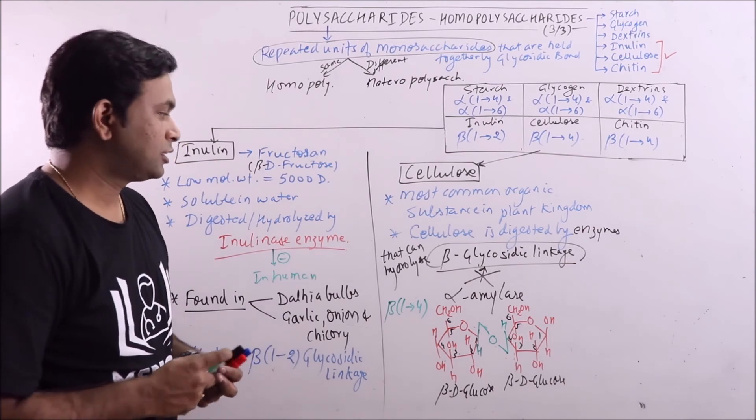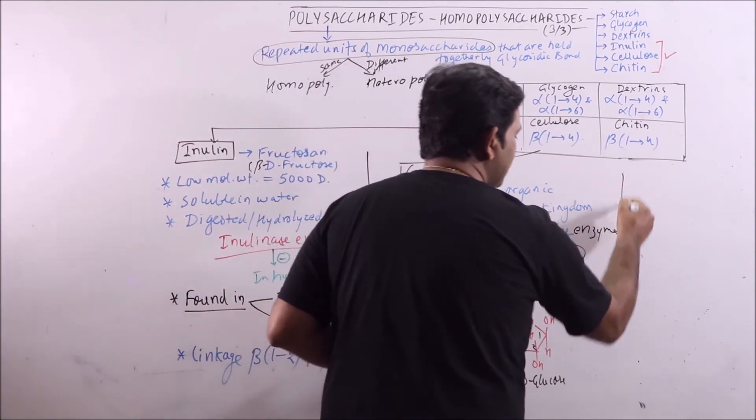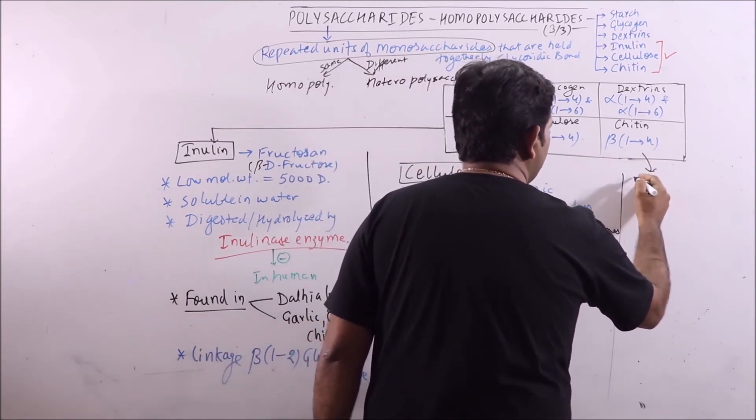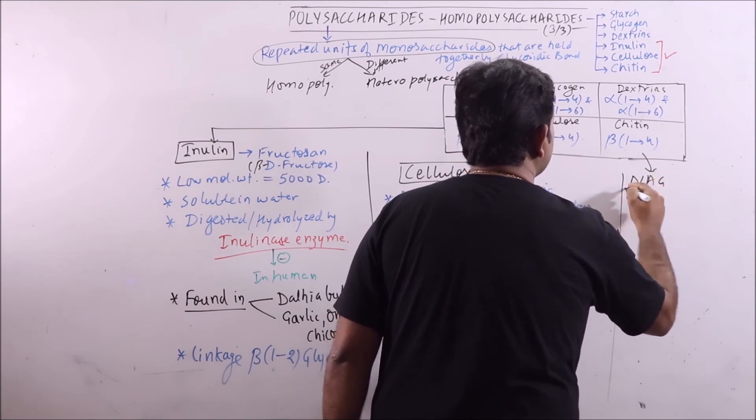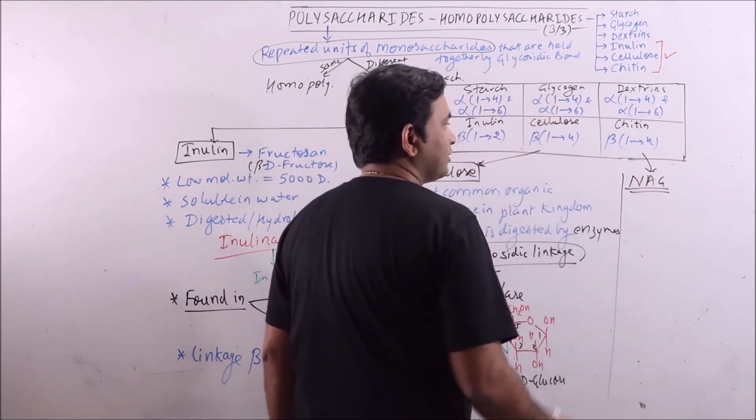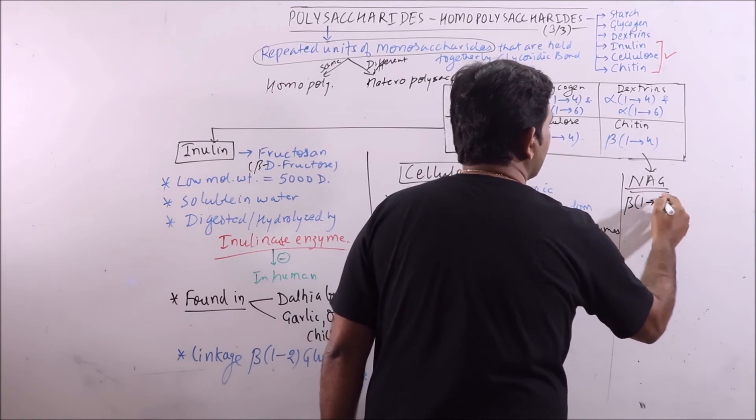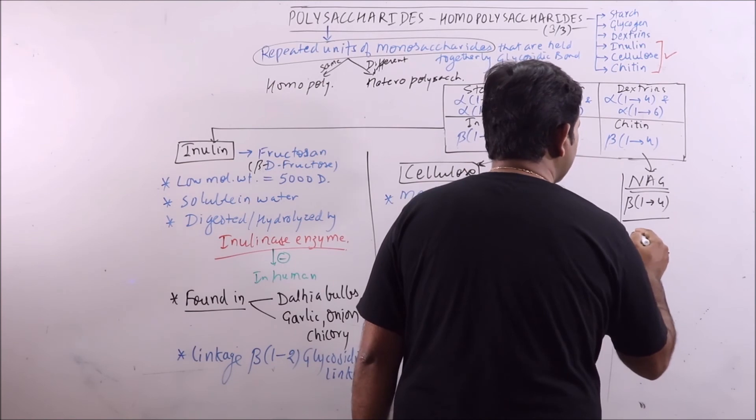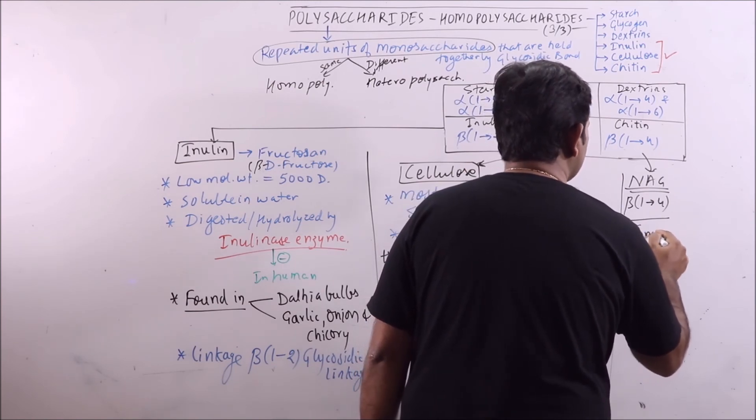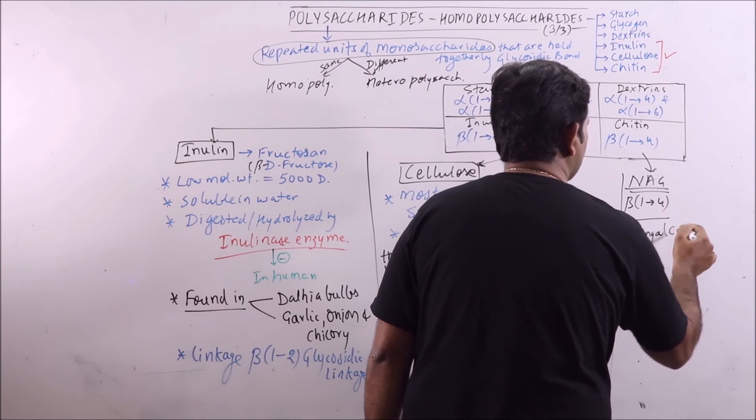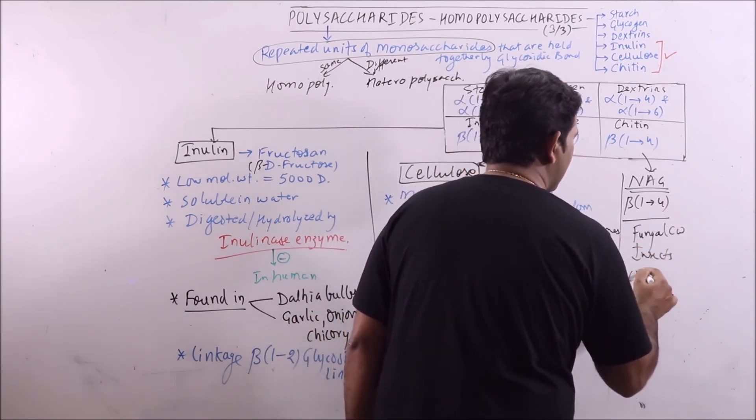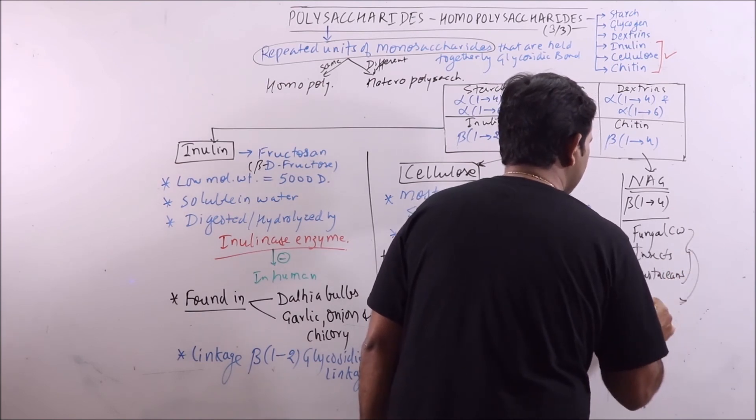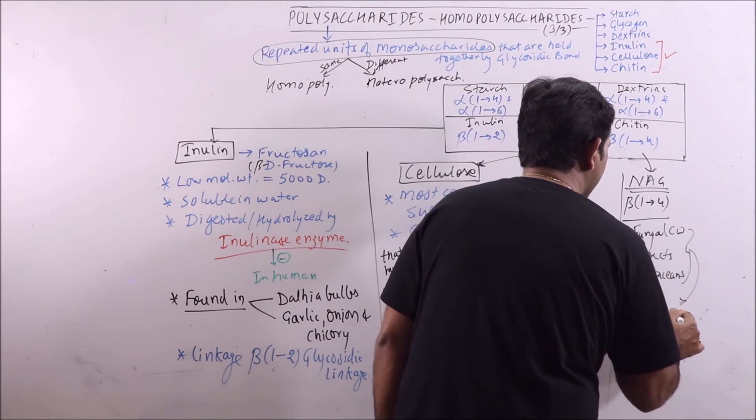So this is cellulose. And the last one is chitin. Chitin is made up of units known as N-acetyl glucosamine which are held together by beta-1,4 glycosidic linkage. It is found in fungal cell wall, insects, and crustaceans as structural polysaccharide.